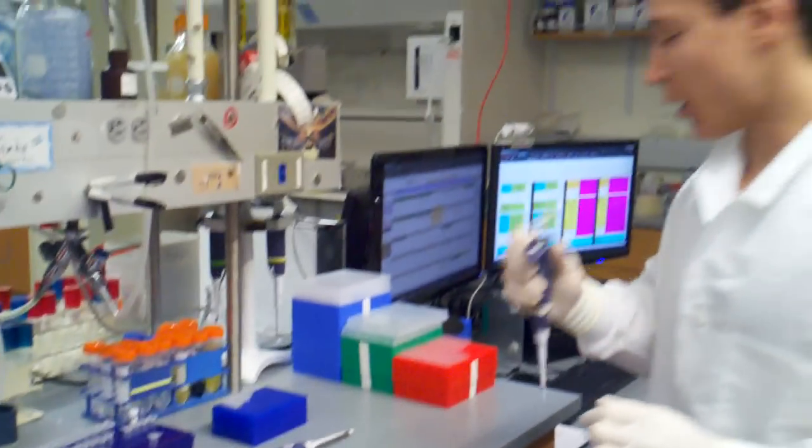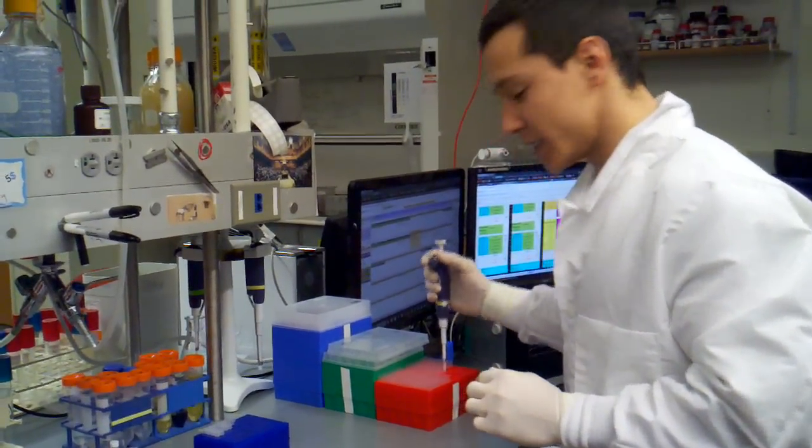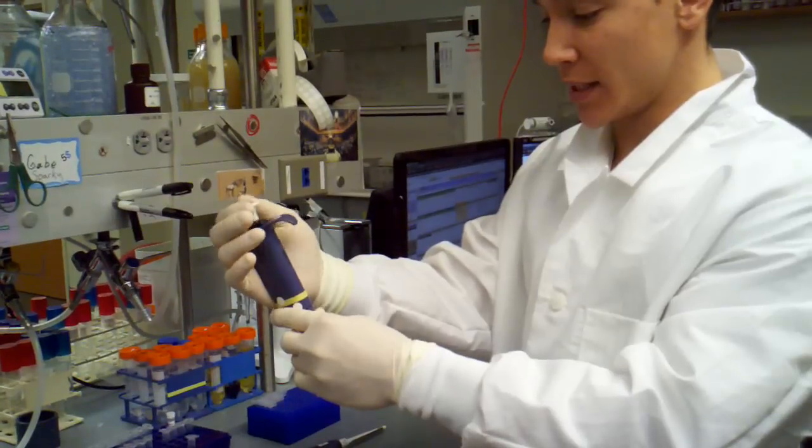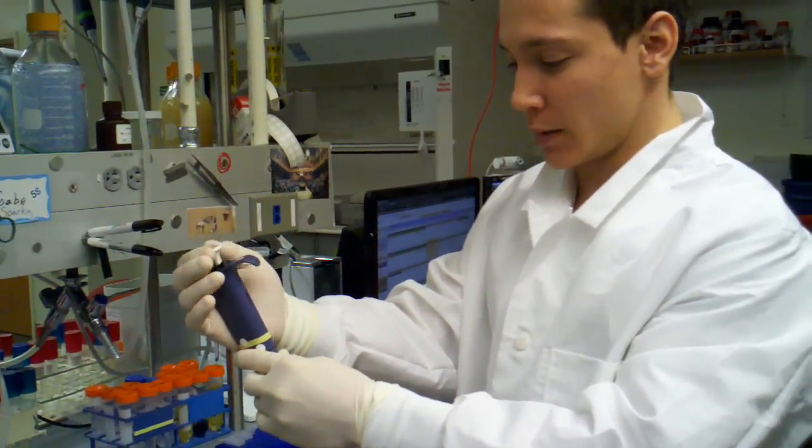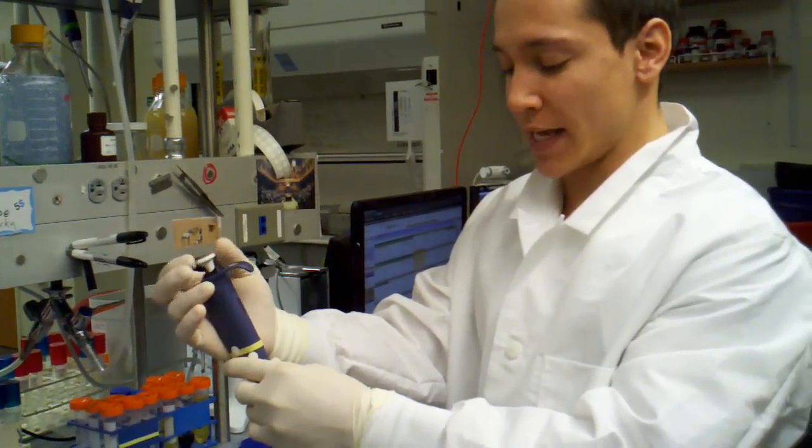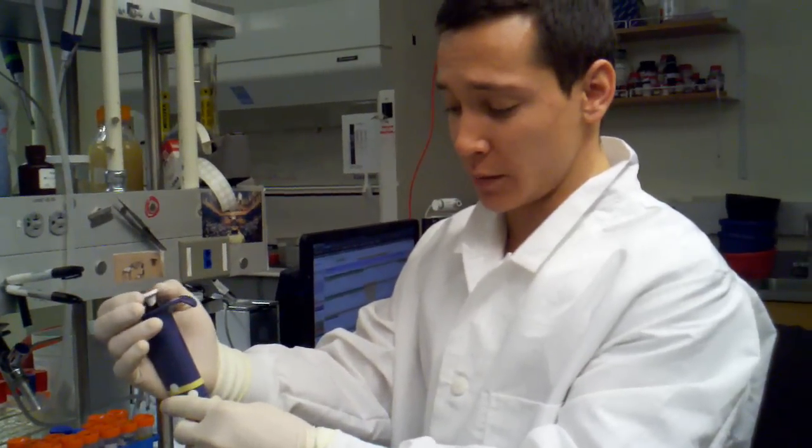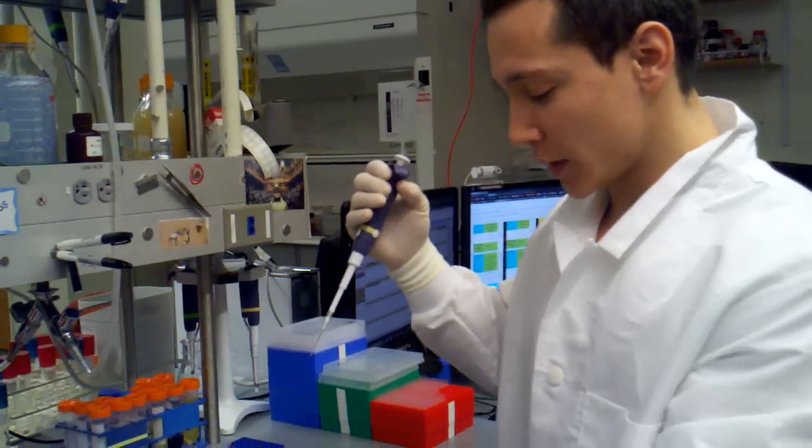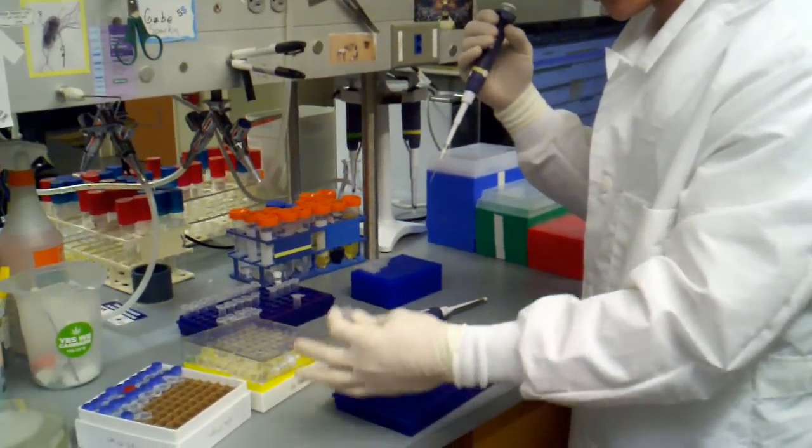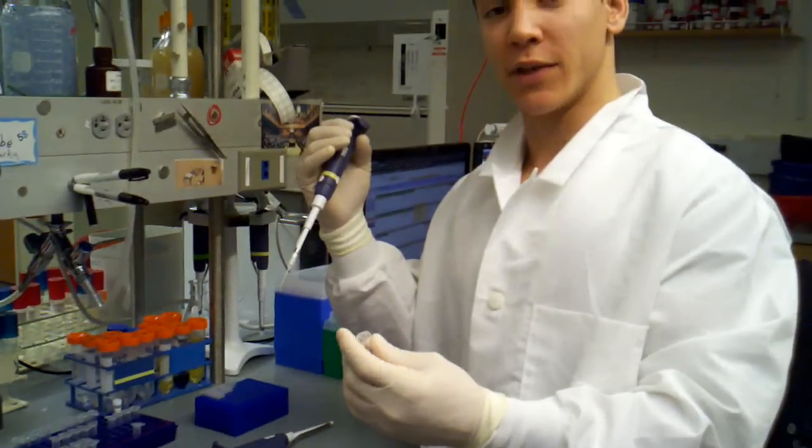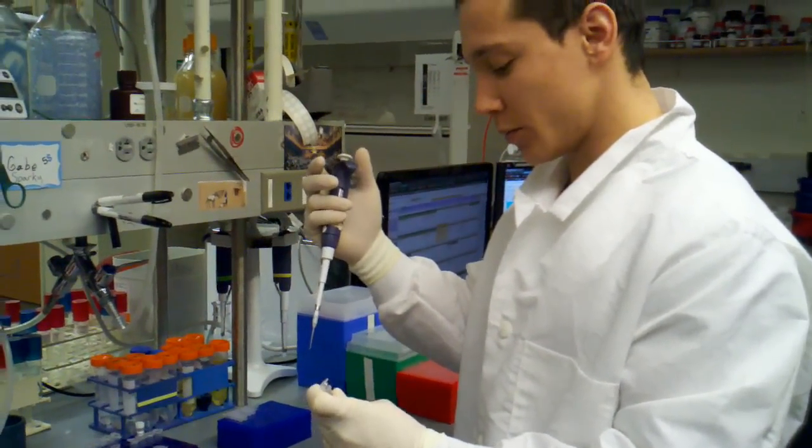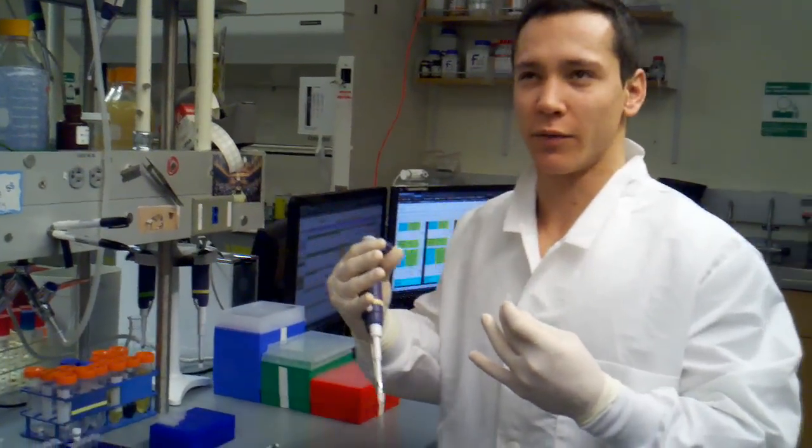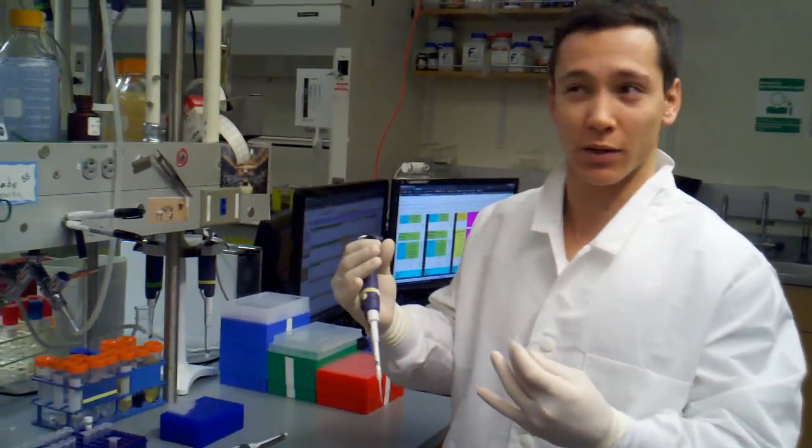And now we're going to be adding our oligos. Our oligos define the piece of DNA that we're going to be amplifying, and we're using them at 10 millimolar. Usually if you're running a single PCR reaction, a single 50 µL PCR reaction, you're using 1 µL of each oligo. Since we're doing a master mix for 4 different PCR reactions, we're going to be putting 4 µL of each oligo.